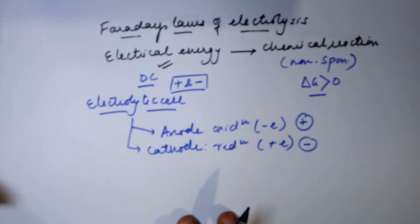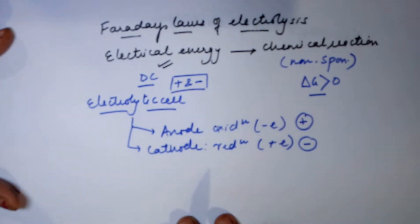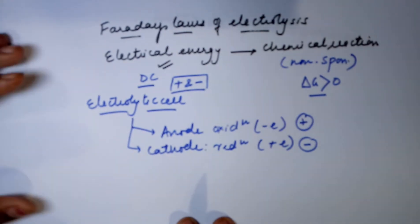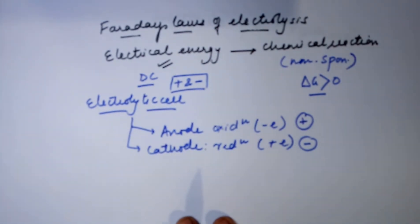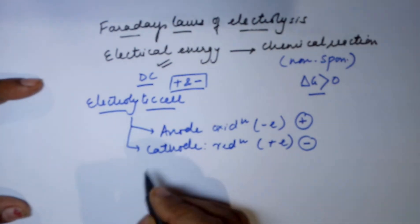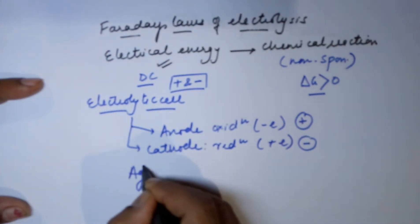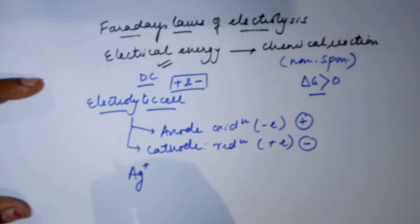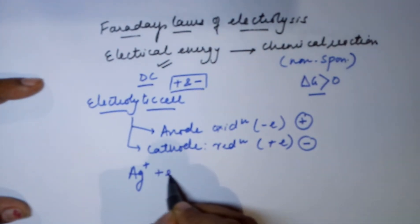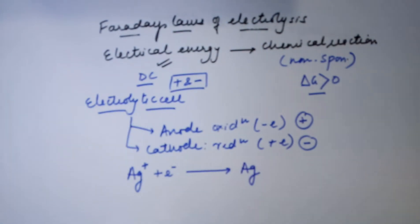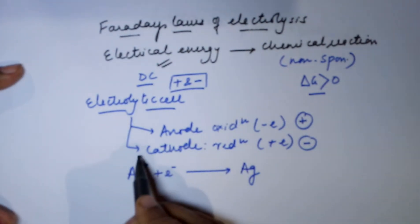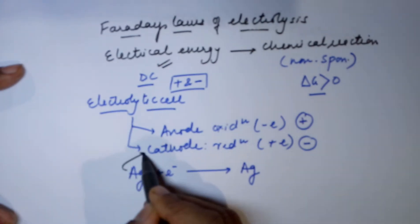Let us take a reaction where I am depositing silver atoms. Silver has a valence of one and it accepts one electron to deposit as silver. So if silver is depositing from a solution, it would be as an ion. This silver ion would accept electrons and become silver. Since electrons are gained, this process is going to happen at the cathode.